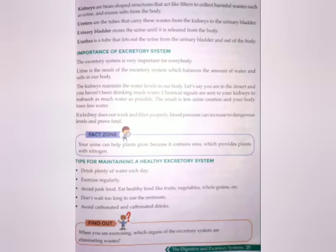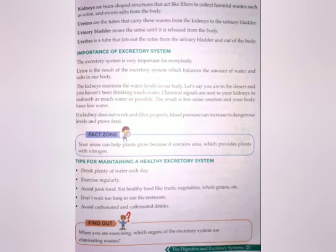The excretory system is very important for us because it balances the amount of water and salt in our body. Suppose you are in the desert and haven't been drinking much water. Your brain will send chemical signals to your kidneys to reabsorb as much water as possible, as a result of which your body will lose less water and produce less urine. But if the kidneys do not work properly, it may lead to increased blood pressure, which may prove fatal.